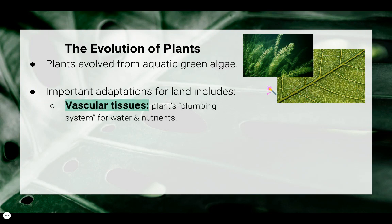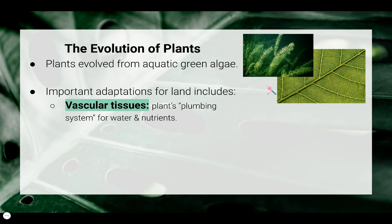The first adaptation that land plants needed is vascular tissues — they have to have some way of transporting water and nutrients. You can think of vascular tissues as an indoor plumbing system.